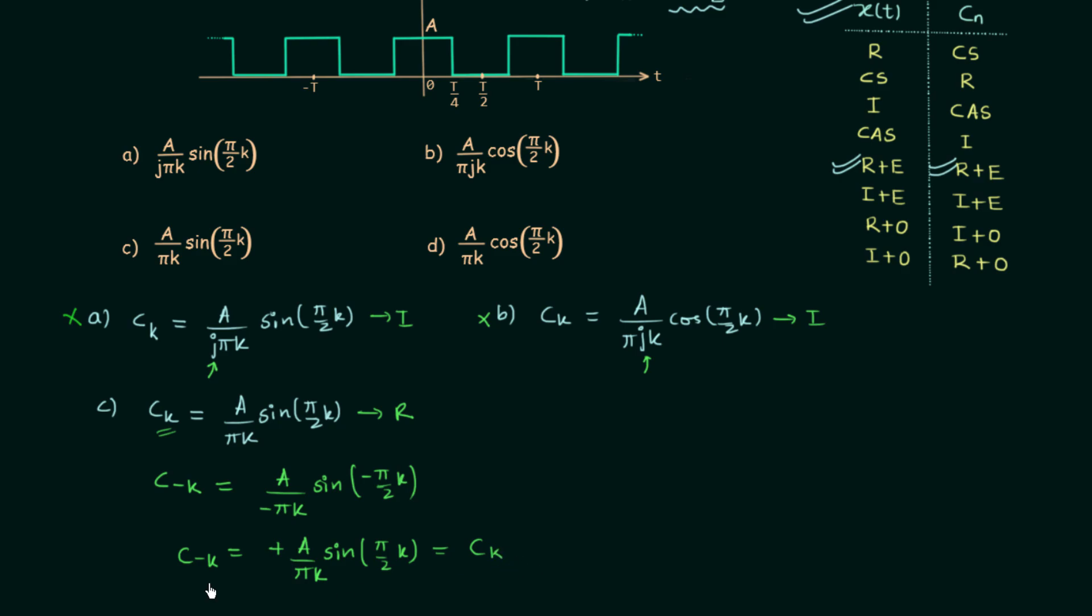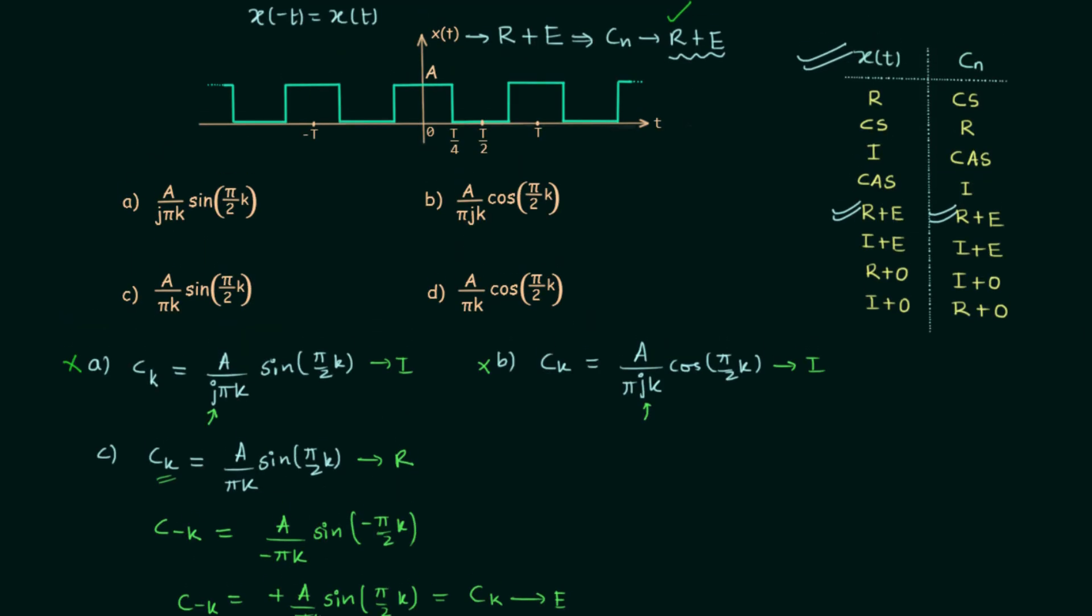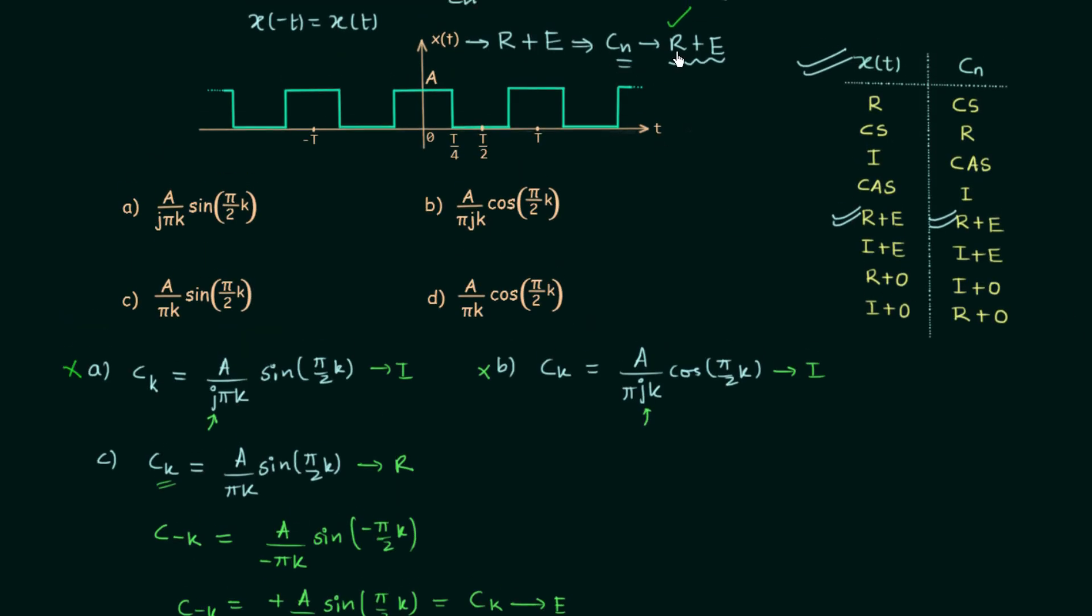And we can say that after performing the reversal we have the same signal. Therefore the coefficient is even in nature. So CK in case of option C is real and also it is even. So our condition is satisfied. We needed the coefficient to be real and even. And in option C the coefficient is real and even.